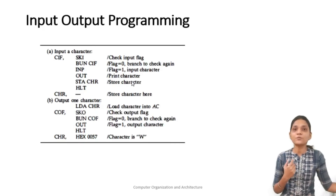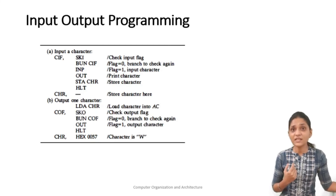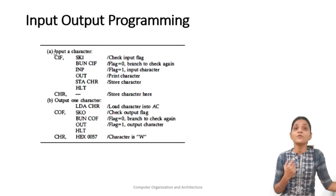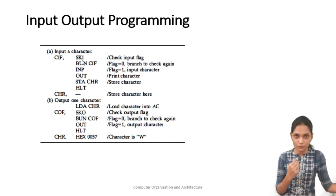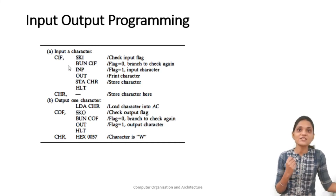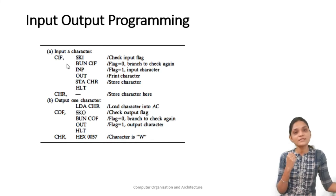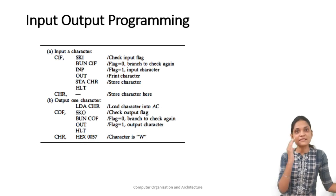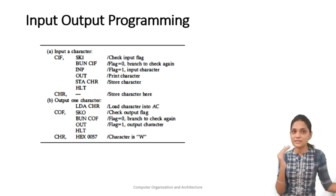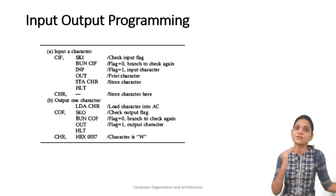Next we look at input/output programming. In I/O programming we use the SKI and SKO instructions. SKI is the instruction for checking the input flag. If the input flag is 1, the next instruction — which is a branching instruction — is skipped. If the flag is 0, the next instruction is executed.